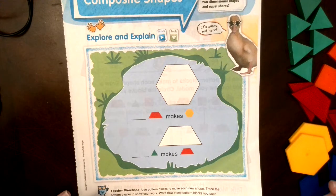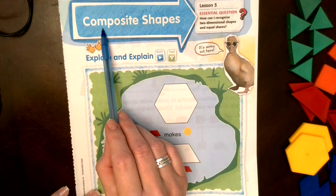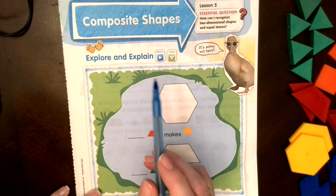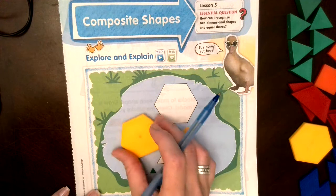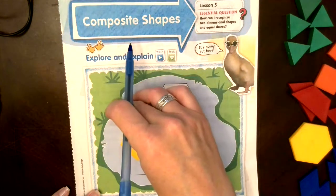Hello boys and girls, today we are doing our math lesson and we are working on composite shapes. Composite shapes is when you can take a shape and make something new out of it by adding other shapes. So I just made a new shape, right? It's kind of fun.